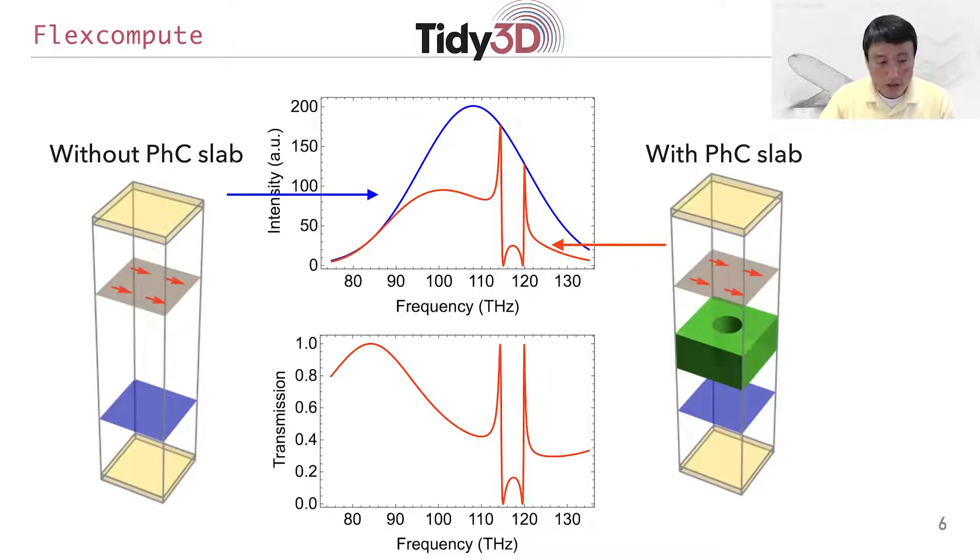And with this, we run two simulations. One is without the photonic crystal slab, and that produced the blue curve here. That gives a characterization of the incident wave spectrum.